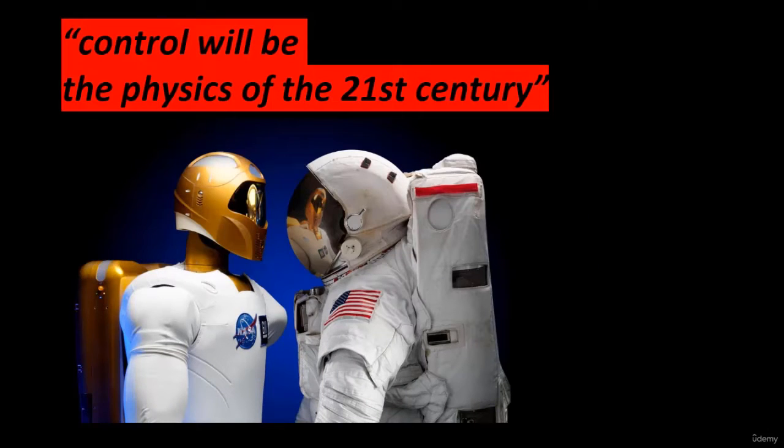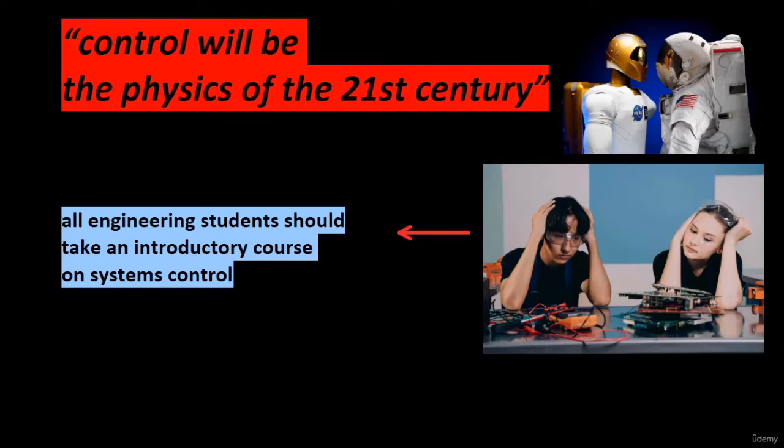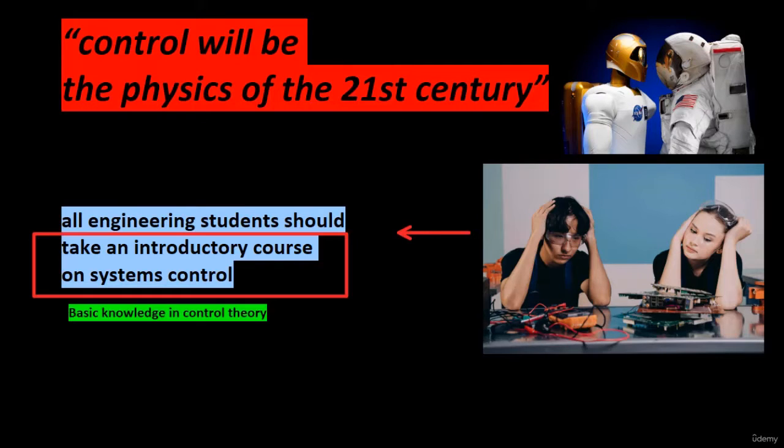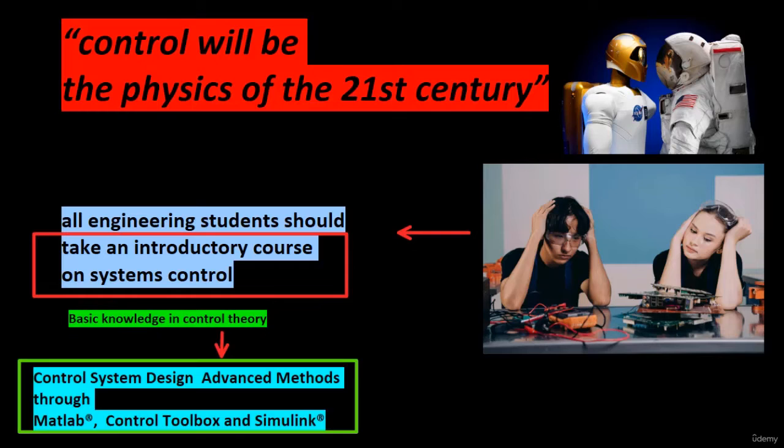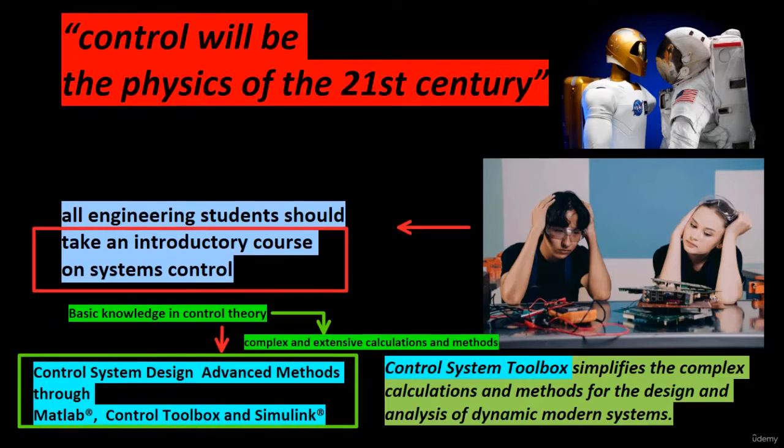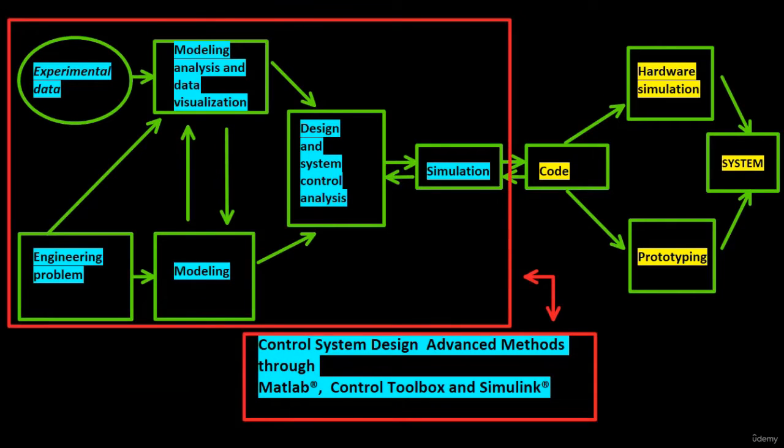The phrase 'control will be the physics of the 21st century' means that all engineering students should take an introductory course in systems control. This basis is the foundation of this course in which complex and extensive calculation and methods are applied with the help of control system toolbox in order to carry out all steps of the control engineering investigation of the system.